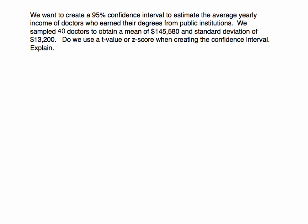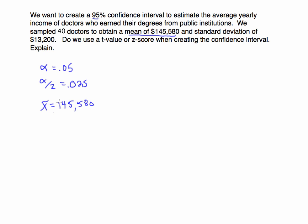Let's determine how we decide. First, I'll write down what I know. The confidence interval is 0.95, which means alpha equals 0.05, and alpha over 2 equals 0.025. Regardless of whether we use a t or z, we'll still need that information. The sample mean is 145,580 and the sample standard deviation is 13,200.